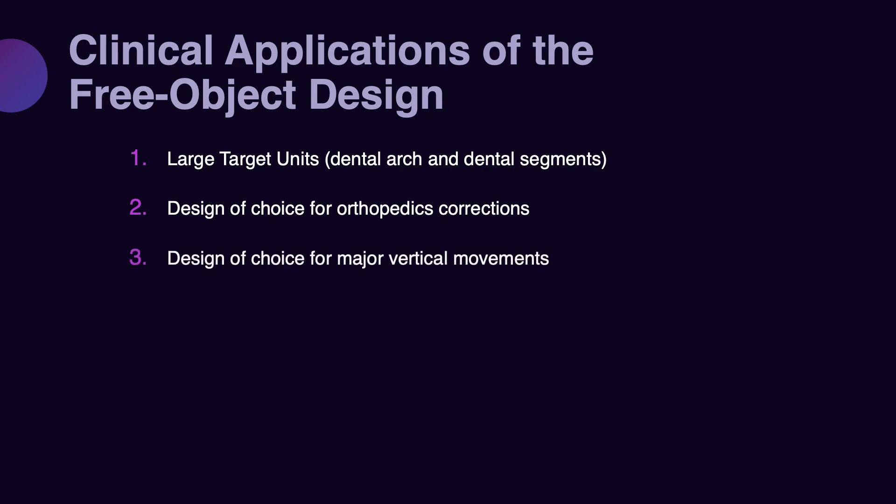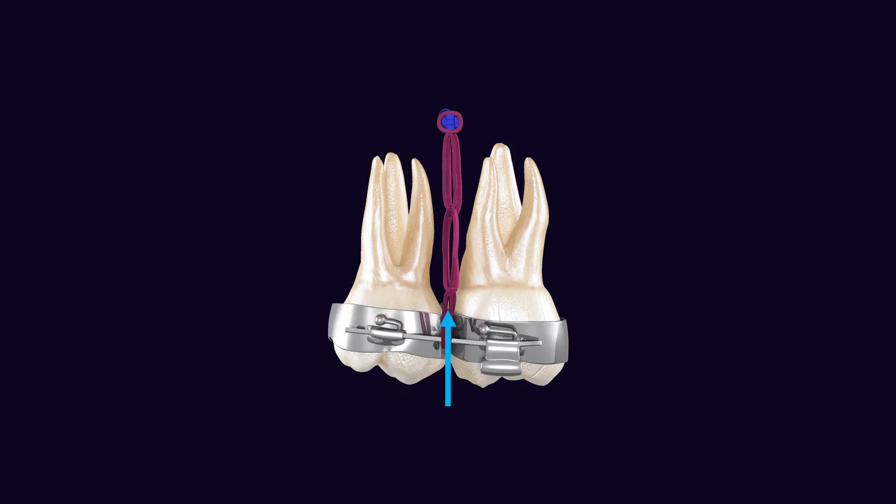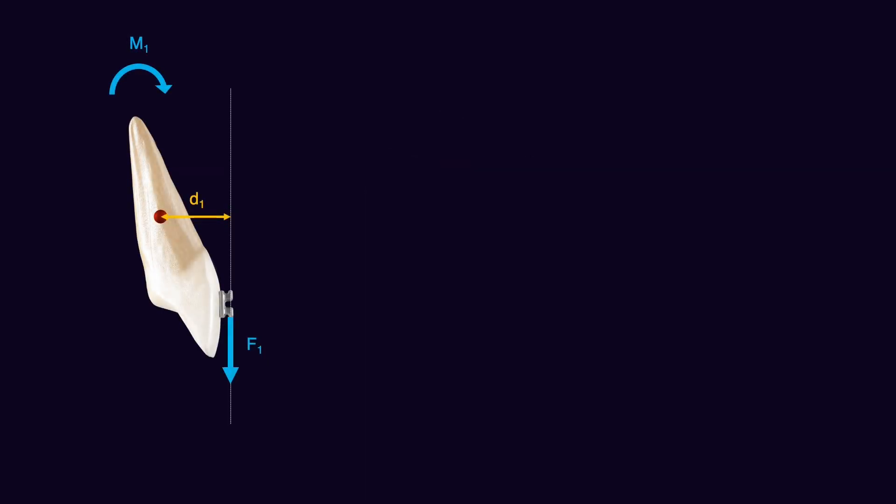The second indication is major movements in the vertical direction. It doesn't matter whether you have a large target such as a dental arch, a segment, or a single tooth — application of vertical forces simultaneously with a couple is difficult. It is possible, but it makes the design very complex. Using free object design makes this movement much simpler. In this design, because the line of action of the force passes close to the center of resistance, the moments that appear in your system are small and do not produce too much side effect, and there are different ways to control those moments.